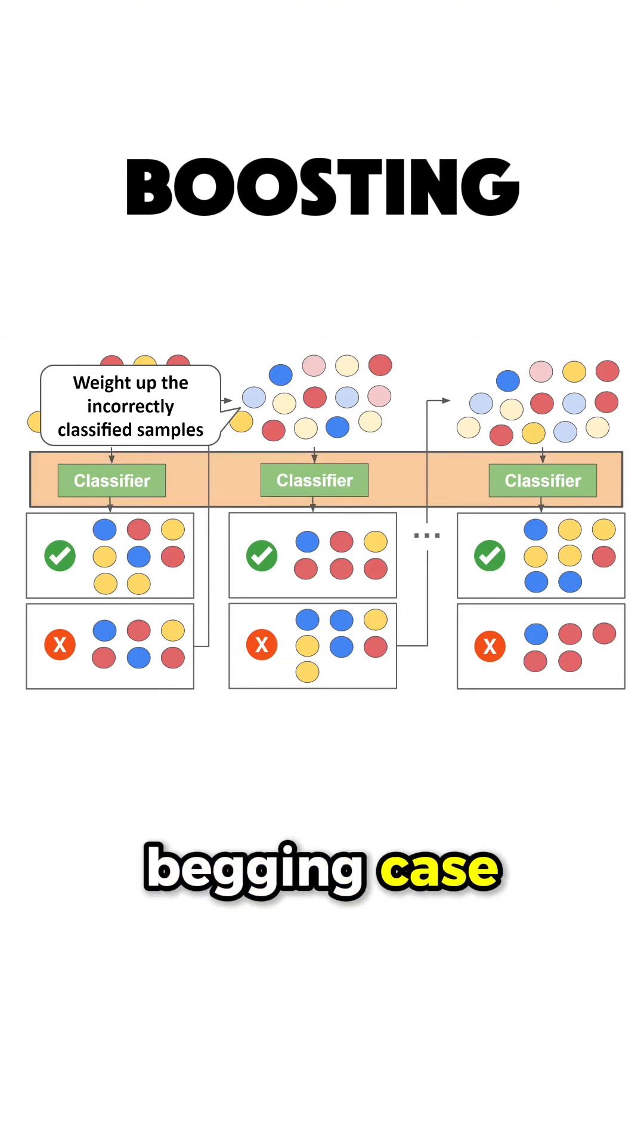At the end, as in the Bagging case, you use all these models in an ensemble to make predictions on new data.